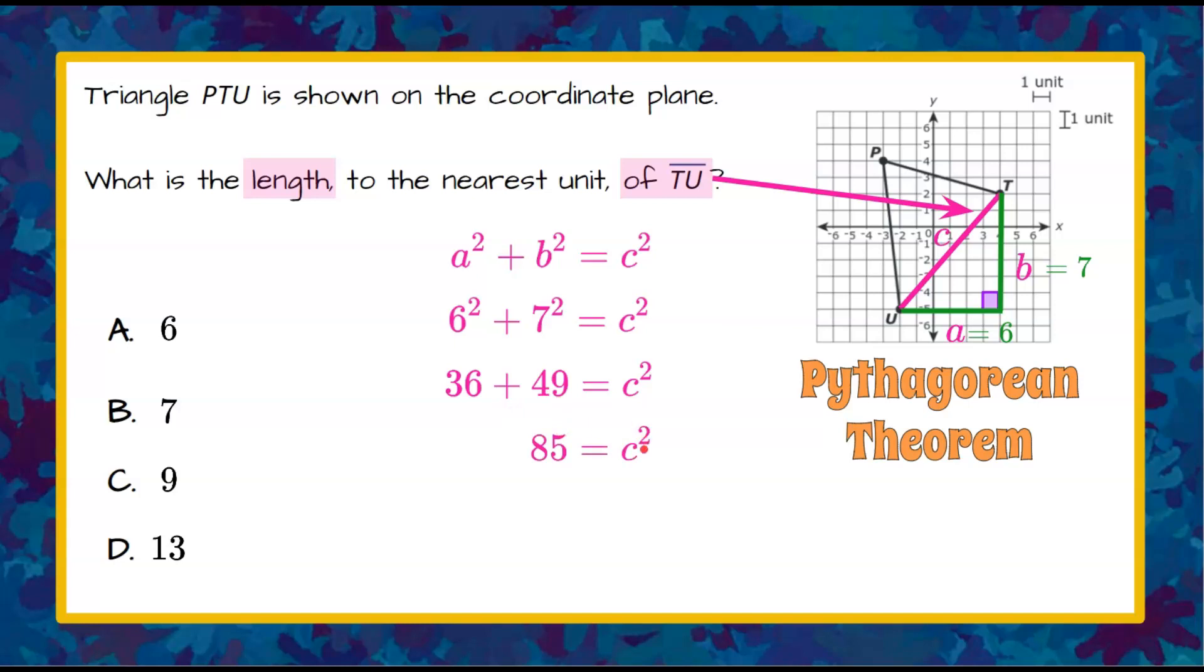To solve for C, because we know that C squared equals 85, we're going to do the inverse of square, which is to find the square root. What you do to one side, you must do to the other. So the square root of C squared is C, and using your calculator, the square root of 85 is going to be about 9.2.